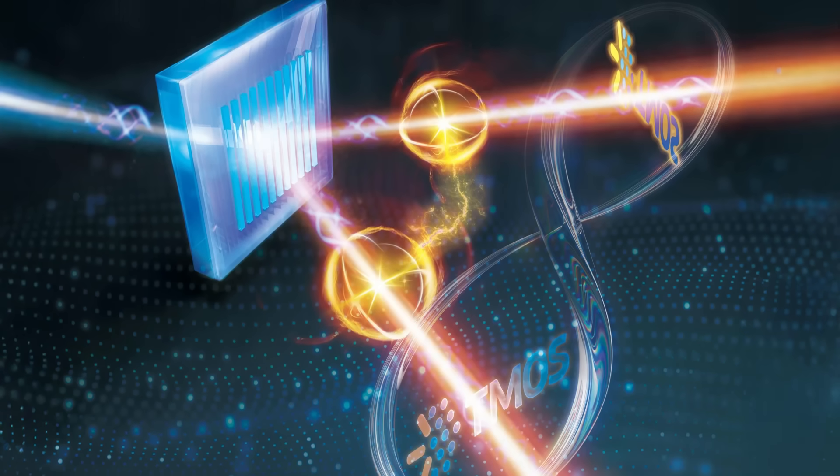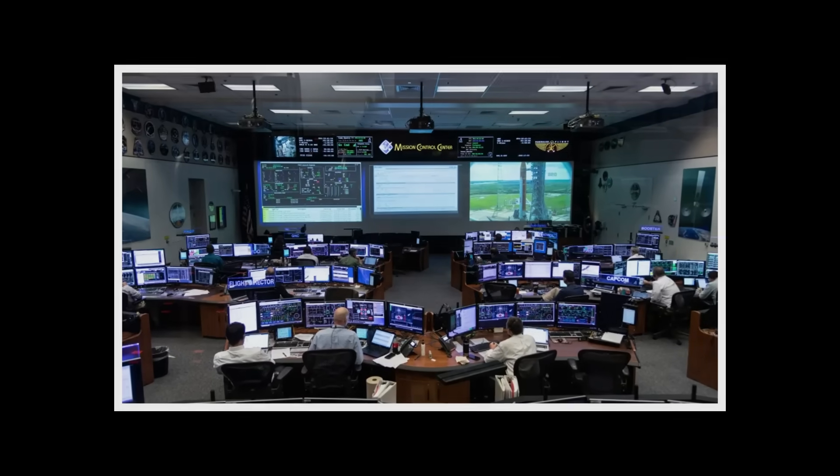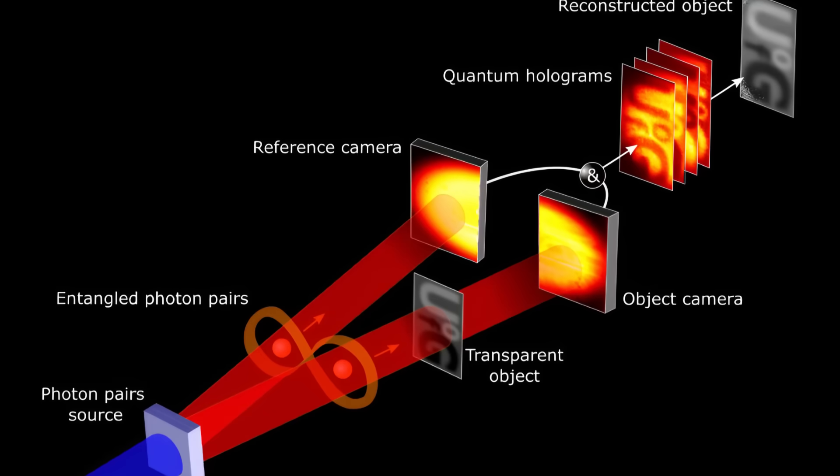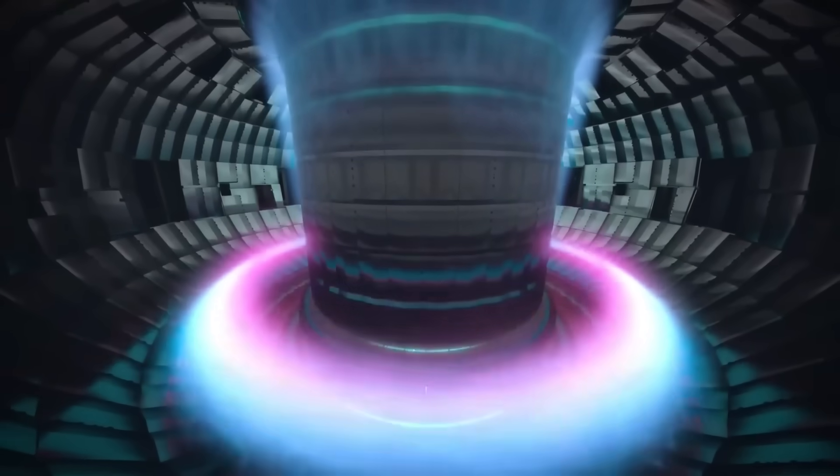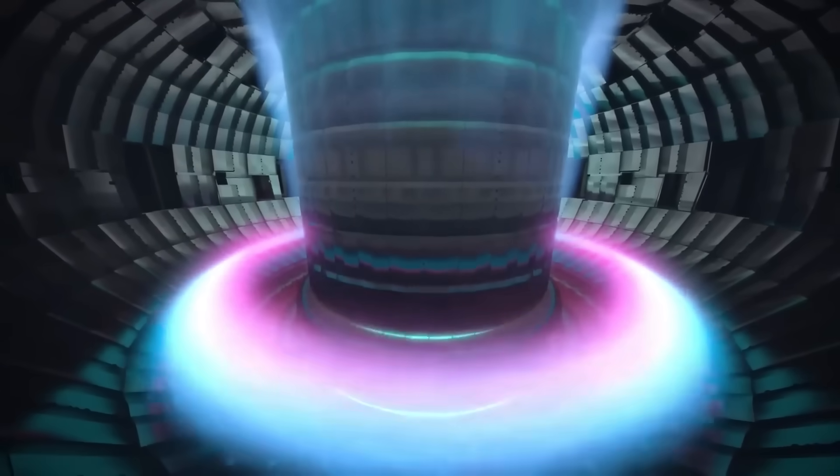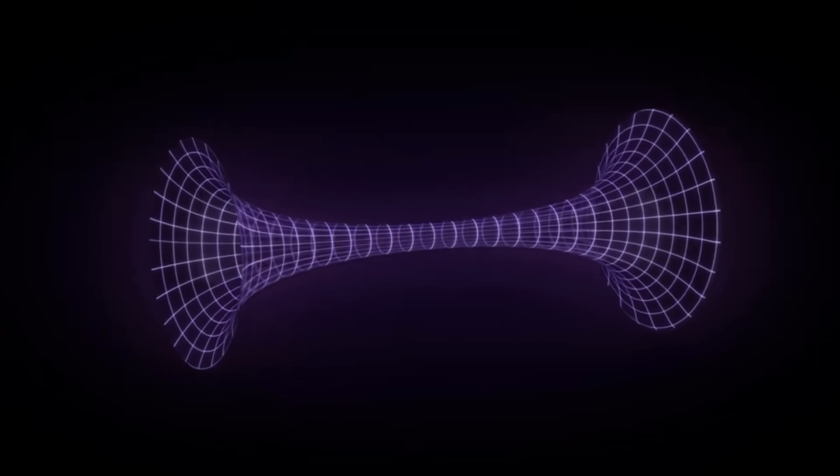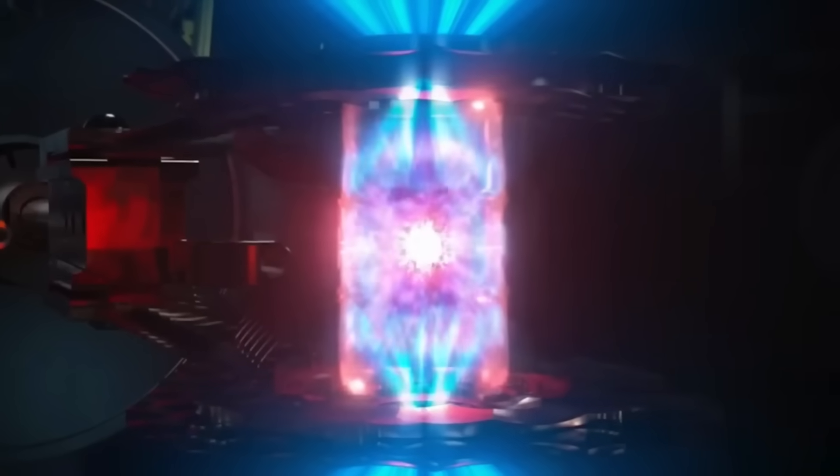Then there's quantum ghost imaging. Scientists at labs worldwide use entangled photons to photograph objects. But here's the twist. The photons that create the image never actually touch the object being photographed. The photons that hit the object don't contribute to the image at all. It's as if the object is being seen by its quantum ghost. This isn't theory. It's happening in labs right now.